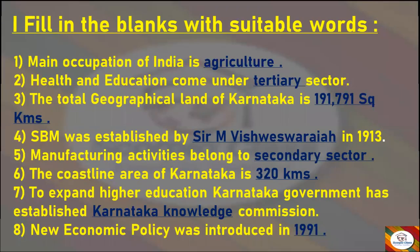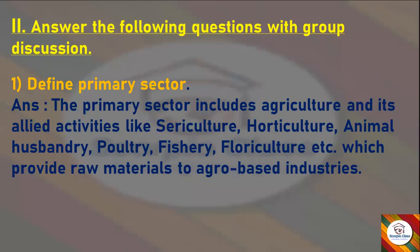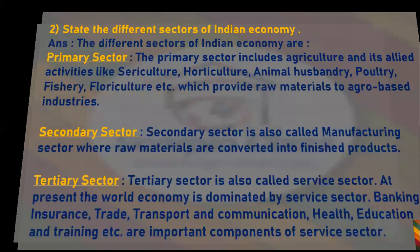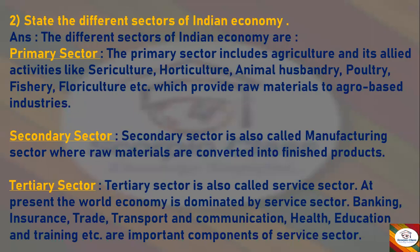Now let's go to the second main: Answer the Following Questions. First question: Define primary sector. Answer: The primary sector includes agriculture and its allied activities like sericulture, horticulture, animal husbandry, poultry, fishery, floriculture, etc., which provide raw materials to agro-based industries.